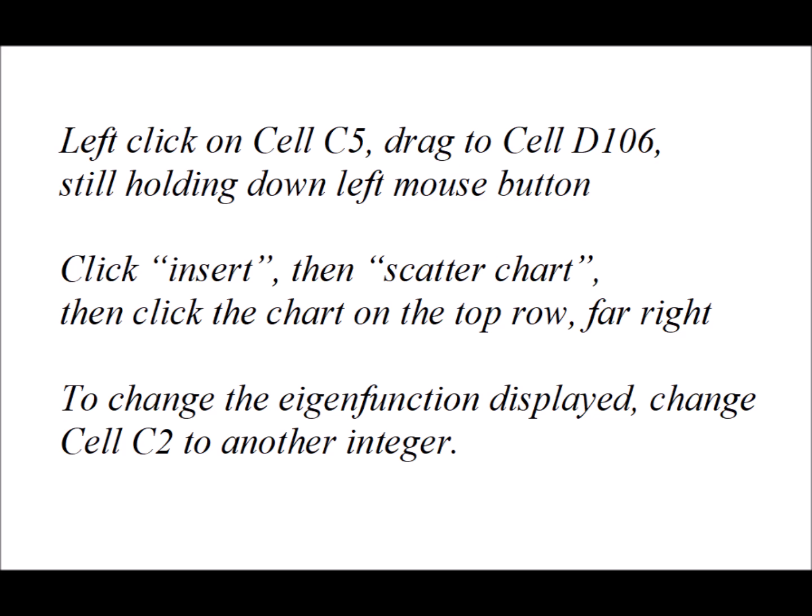So now to visualize the data for the first eigenfunction, we left click on cell C5, and then we drag while holding down the left mouse button to cell D106. Then we go up to the top and click insert, then scatter chart. And then we'll notice that there's a number of little pictures of charts, and we want to click on the chart that's on the top row on the far right. And once we've made our chart, we can go back and change which particular eigenfunction is displayed in that chart, simply by changing the value of cell C2 to another integer. And then you'll notice we go to the chart, the chart will have changed updating based upon the value that you have in cell C2.